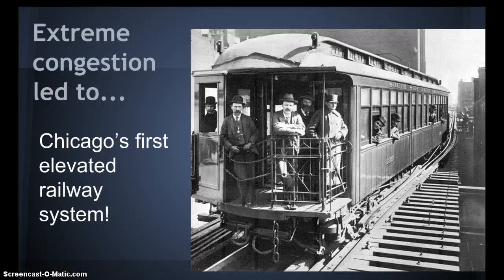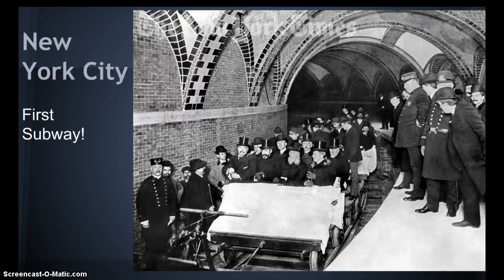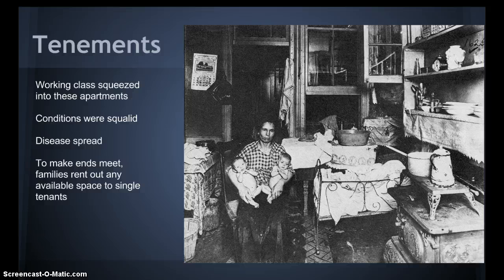The congestion leads to Chicago's first elevated railway system, pictured here, and New York City had the first subway, Boston soon after. Working class families lived in these crowded apartment buildings called tenements. Families would, to make ends meet, even rent out any available space to single tenants. Conditions, as you can see in the picture, were squalid. Diseases spread rapidly.